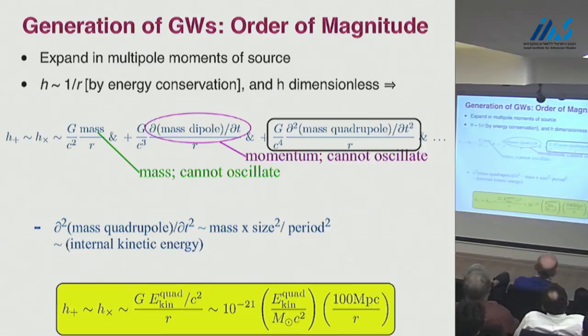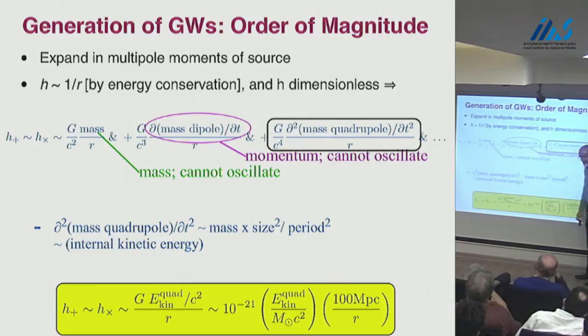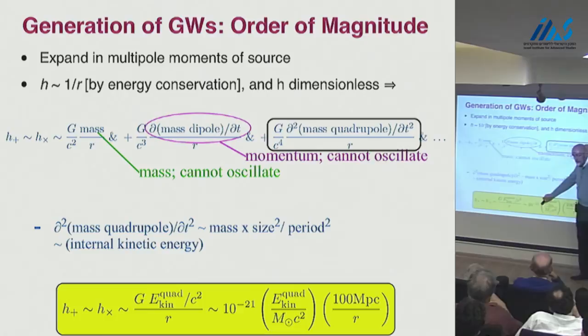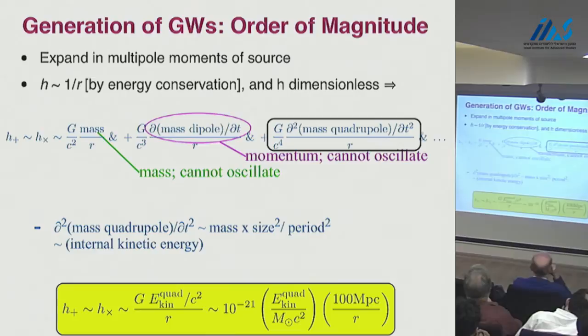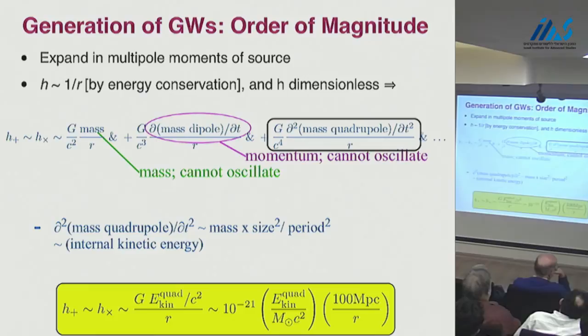Putting in numbers: place the source at 100 megaparsecs — 300 million light years, the closest we'd expect to catch a binary neutron star or binary black hole merger. Put in a quadrupole kinetic energy of one solar rest mass times c² — an optimistic amount for a binary of a few solar masses. You get h ~ 10⁻²¹. To have any hope of seeing gravitational waves, we need to detect strains δℓ/ℓ at the 10⁻²¹ level, and more likely 10⁻²² or even 10⁻²³.